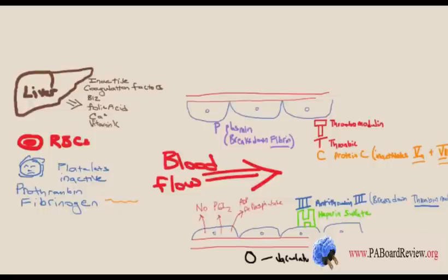Each day, our body deals with thousands of microthrombi — little blood clots that happen just from daily activity like exercising or eating. How does our body take care of these without compromising the vascular system? The endothelial lining consists of a single layer of flat, round, smooth cells — think of them like a pancake. They're very resistant to friction, like Teflon. But they're also biologically active — they produce products that keep platelets inactivated and coagulation in check.